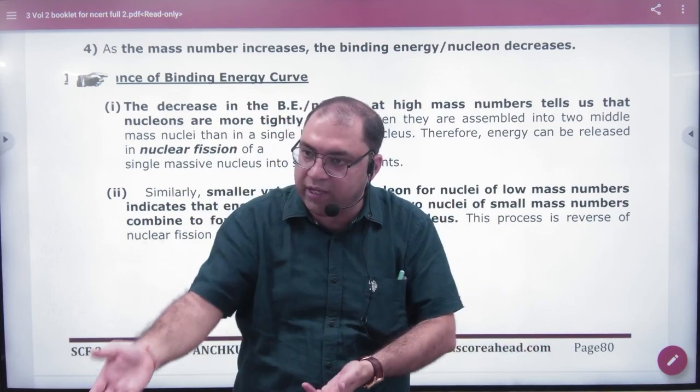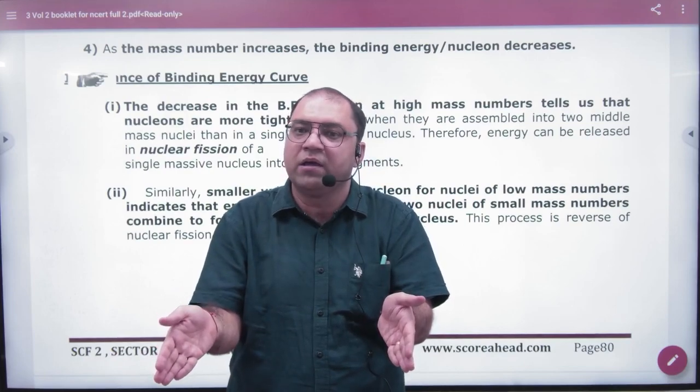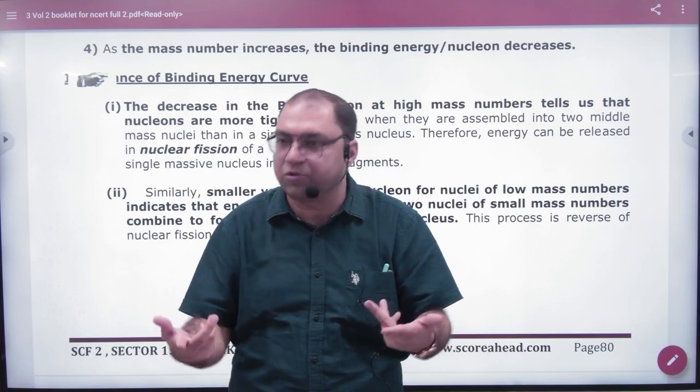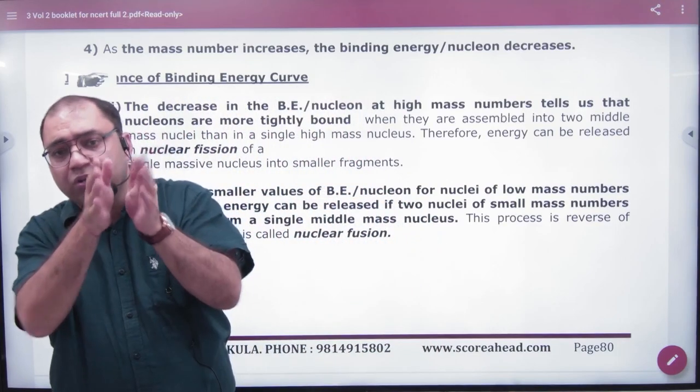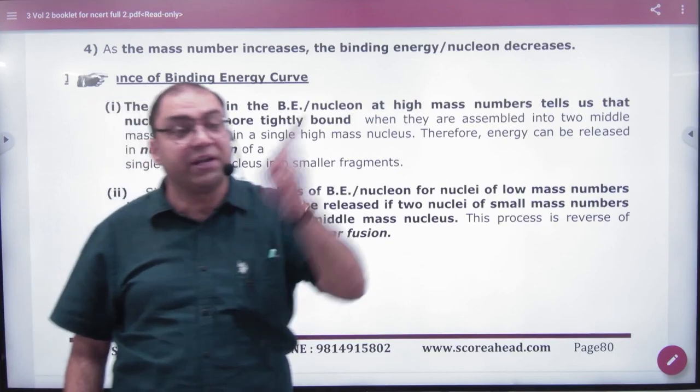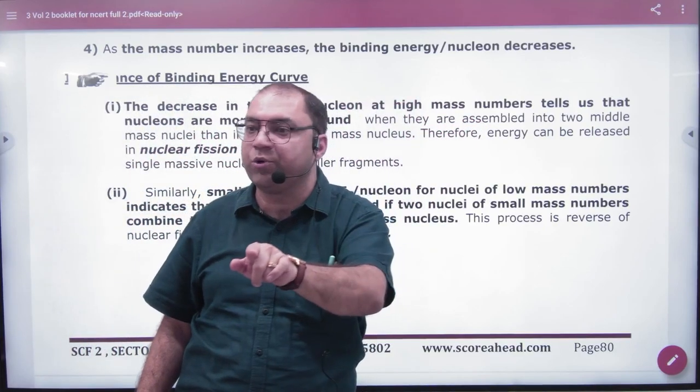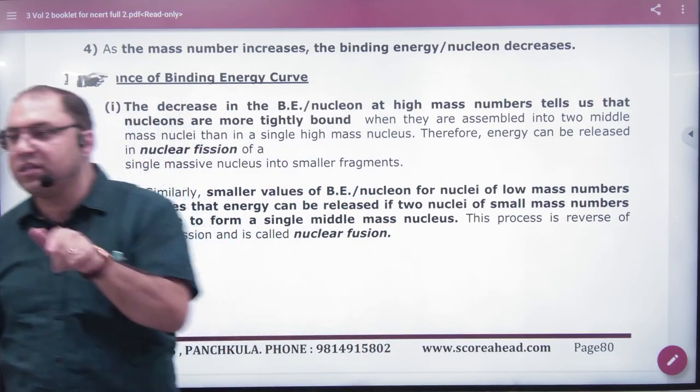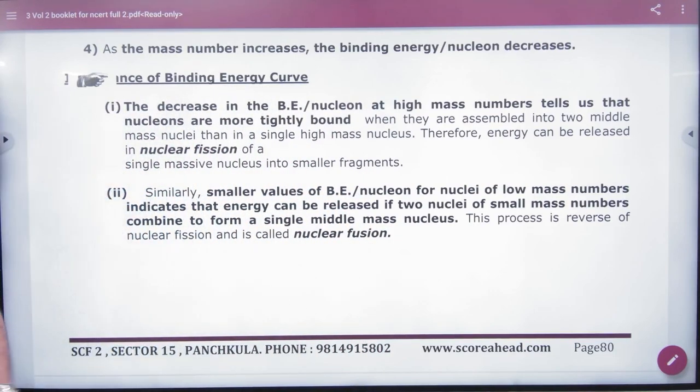When you have two small nuclei, the binding energy per nucleon will increase and they will be stable. But when you break the big nucleus into smaller parts, in this process energy is released. This is nuclear fission. The reason is that the binding energy per nucleon's value is less for the heavy nucleus.